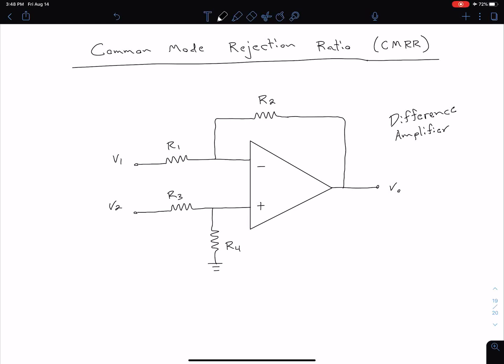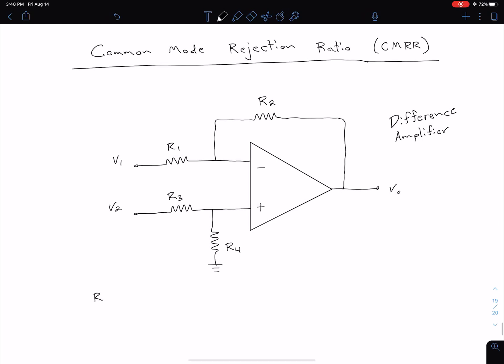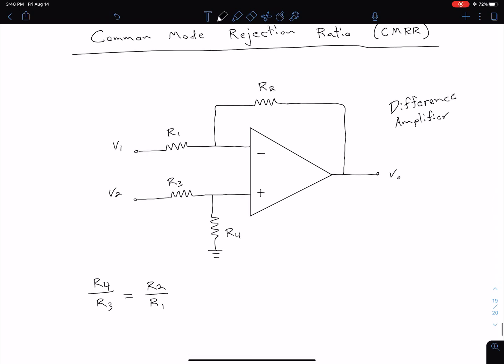In a previous video we introduced this difference amplifier and said that for the ideal case of rejecting the common mode signal - anything that's common between our inputs V1 and V2 - we had this case of R4 over R3 equals R2 over R1. I might be writing that a little different than shown last time, but it's just the same equation rearranged a little bit.